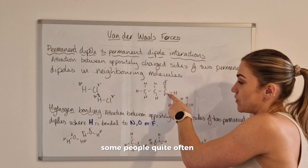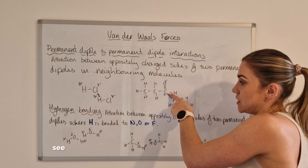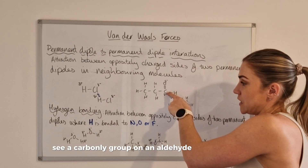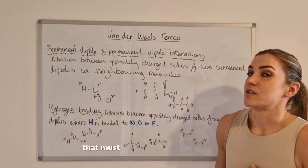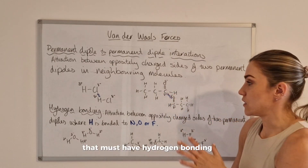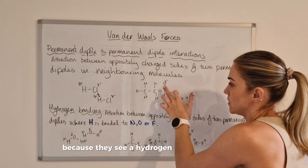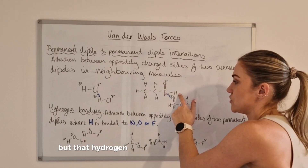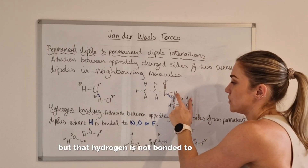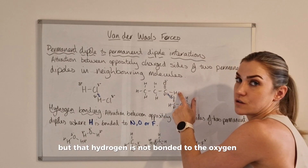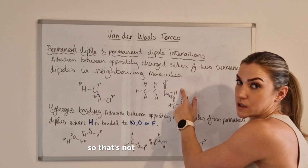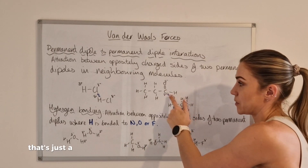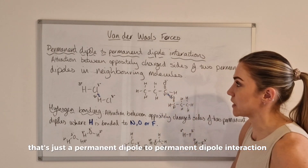Some people quite often see a carbonyl group on an aldehyde and think that it must have hydrogen bonding because they see a hydrogen near an oxygen. But that hydrogen is not bonded to the oxygen, so that is not hydrogen bonding — that's just a permanent dipole to permanent dipole interaction.